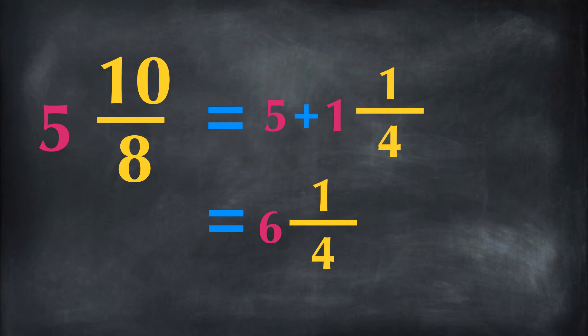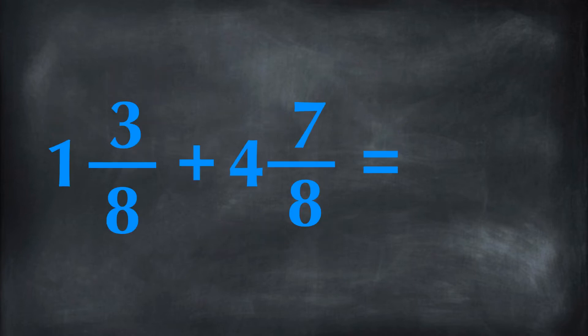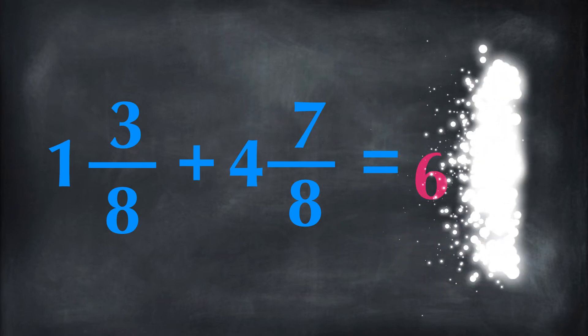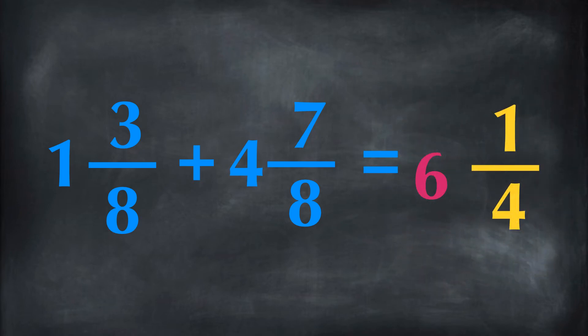5 and 10 eighths equals 5 plus 1 and 1 fourth. We need to add the whole numbers together. Therefore, 5 and 10 eighths equals 6 and 1 fourth. So 1 and 3 eighths plus 4 and 7 eighths equals 6 and 1 fourth.